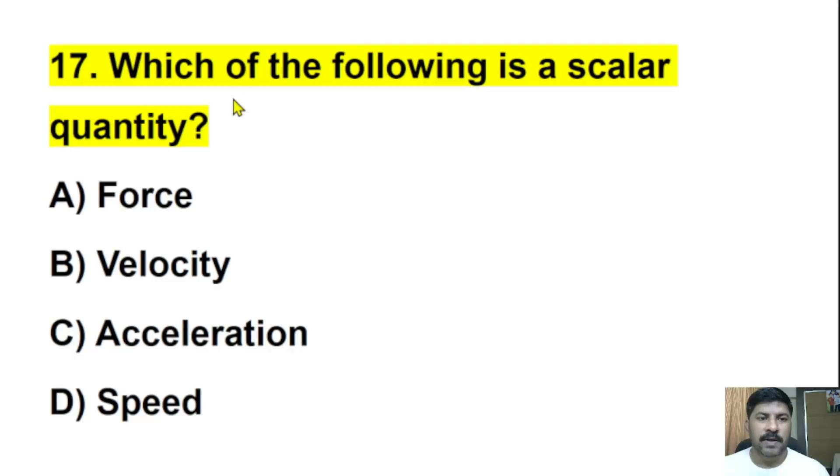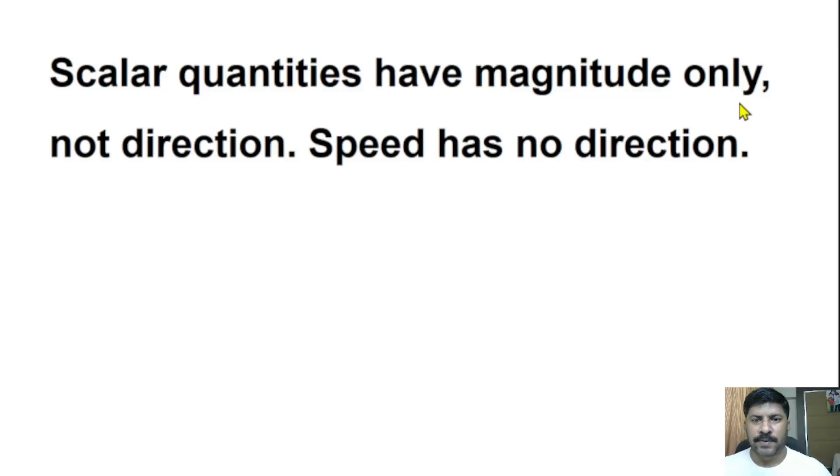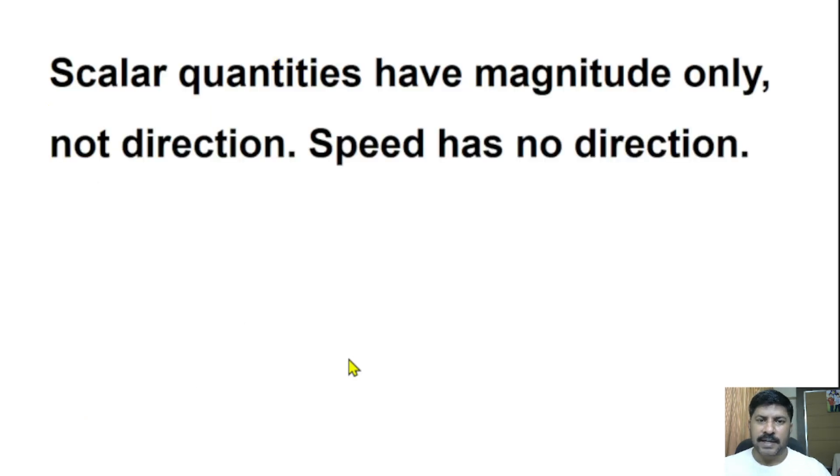Seventeenth question: Which of the following is a scalar quantity? Force, velocity, acceleration, or speed? There are two types of quantities: scalar quantity and vector quantity. The correct answer is speed. Speed is an example of scalar quantity. Scalar quantities have magnitude only, not direction. Speed has no direction. Other options including force, velocity, and acceleration are examples of vector quantities. They have magnitude and direction.